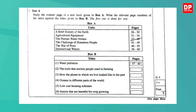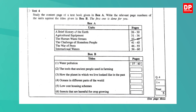The answer to the first one is already given. The first title is water pollution, which is in the unit 'The Human Waste Stream,' pages 37 to 40. The second title is 'The tools that ancient people used in farming.' Farming and agriculture go together, so the unit is Agriculture Equipment. The page numbers are 31 to 36.